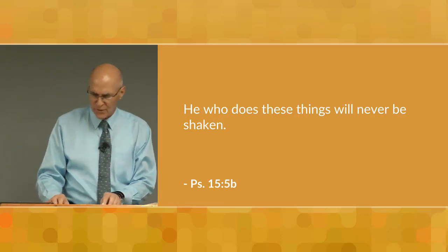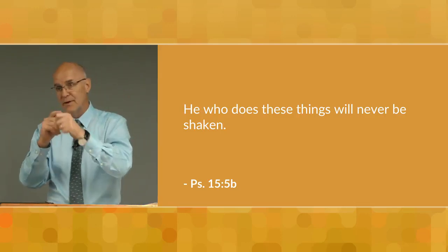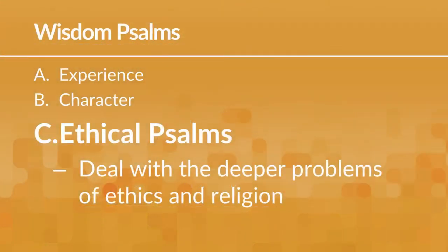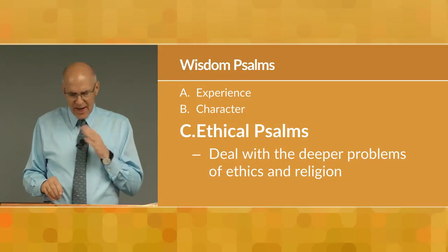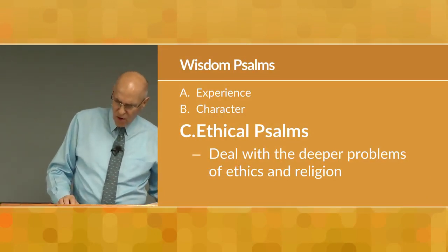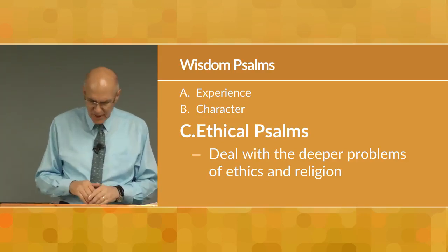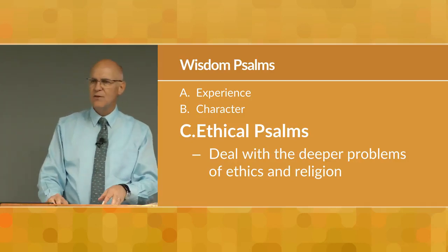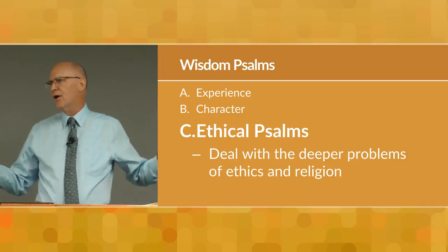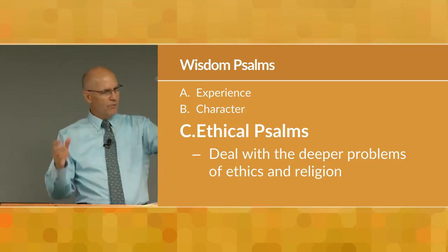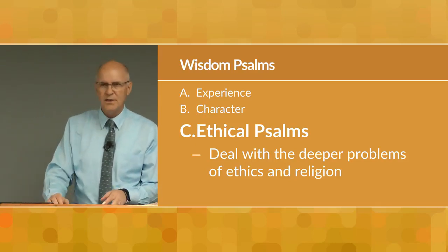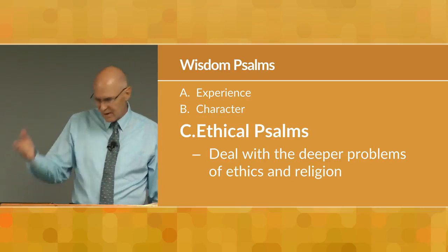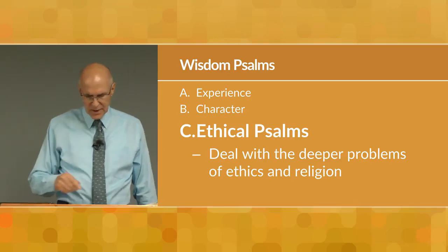So wisdom psalms — experience type, character type, and the third type: ethical psalms. They deal with the deeper problems of ethics and religion. Psalm 49 asks the question: if God is sovereign over all, why does He allow the wicked to prosper and escape penalties while godly souls are denied success and happiness? It's just not fair — the bad guy lives to be 90, dies in his sleep with family around him, never sick a day in his life; while a righteous person knows nothing but trouble and dies a painful death at a young age. Why? That's the question.